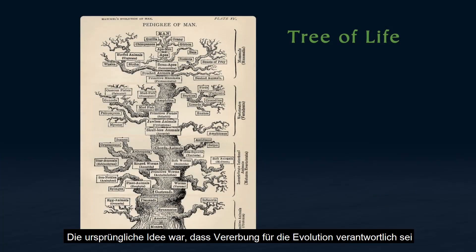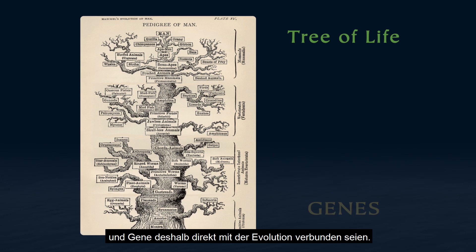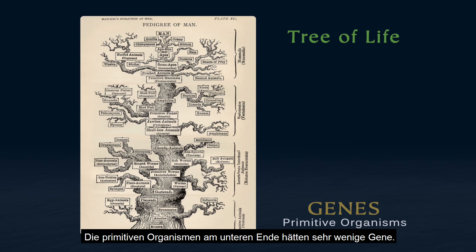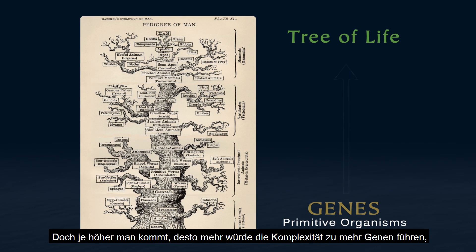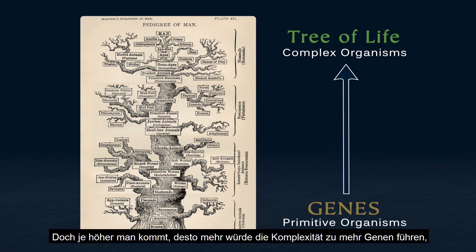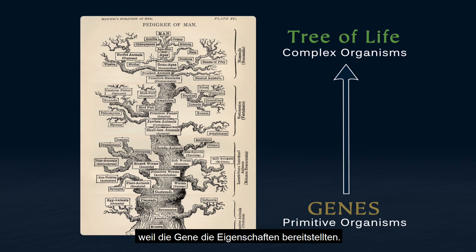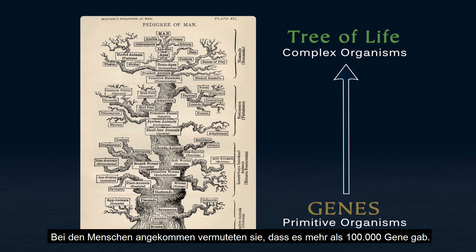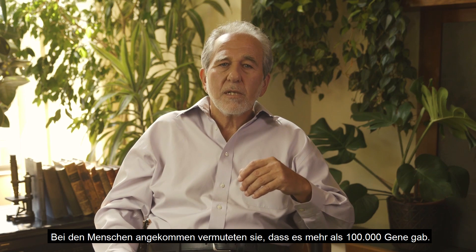The original idea was that heredity was responsible for evolution, and therefore genes were directly connected to evolution. At the bottom, primitive organisms would have very few genes, and as you go toward the top, more and more complexity would lead to more and more genes. So when you get to the level of human, they anticipated there was going to be over 100,000 genes.